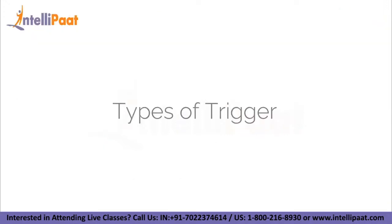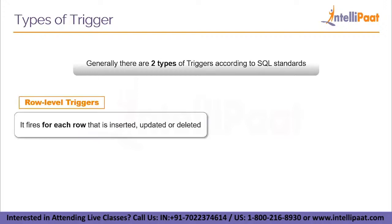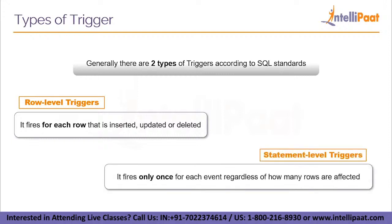Moving on to types of triggers. SQL triggers can be broadly classified into two types. The first is the row-level trigger, which fires for each row that is inserted, updated, or deleted — these are DML (Data Manipulation Language) statements. Row-level triggers are made for DML statements only. The second type is the statement-level trigger, which fires only once for each event, regardless of how many rows are affected.